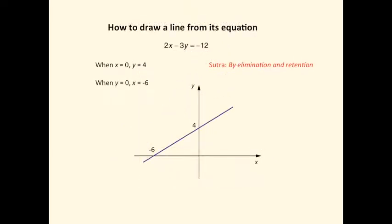How to draw a line from its equation. In this example we have 2x minus 3y equals minus 12. To draw a straight line on a graph you essentially just need two points, and the easiest two points to establish are the y intercept and the x intercept.